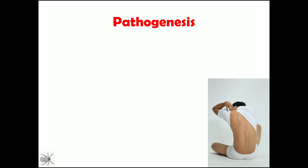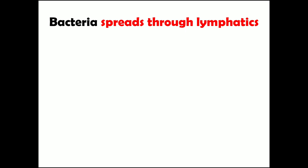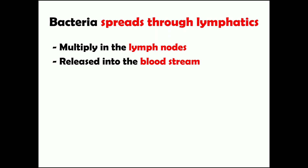The bacteria which causes scrub typhus, Orientia tsutsugamushi, comes under genus Orientia. In the pathogenesis, when a mite carrying Orientia tsutsugamushi bites a person, they get the infection. The bacteria then spreads through the regional lymphatics, reaching the local lymph nodes, where they multiply.